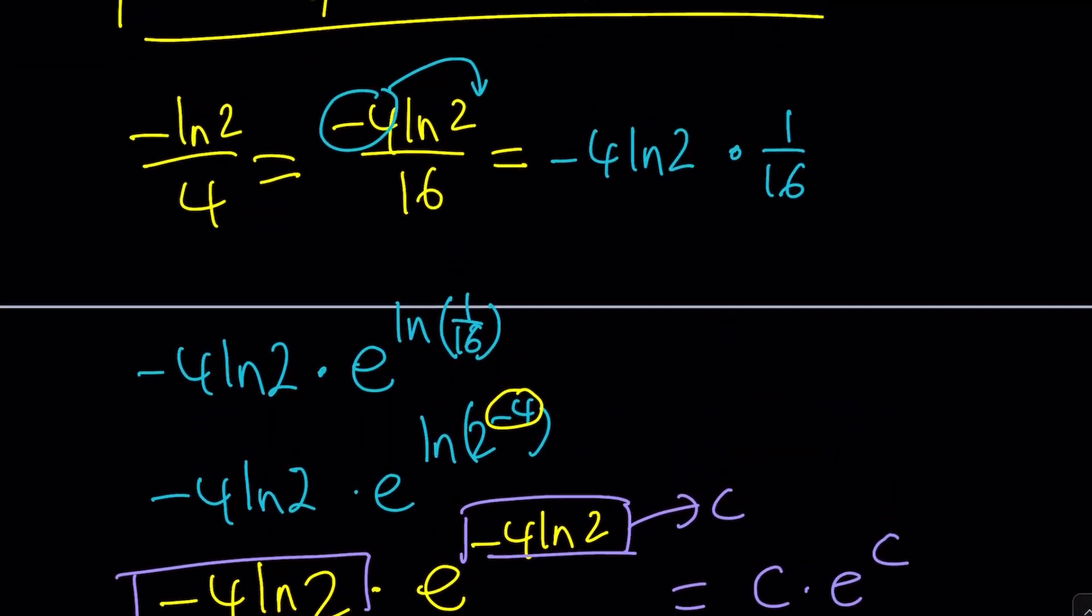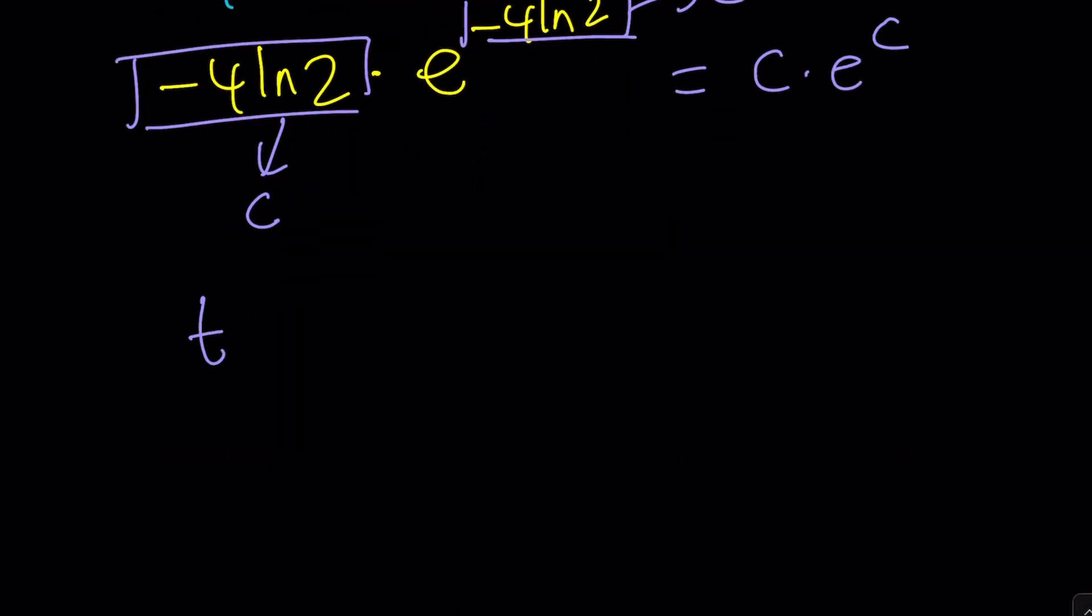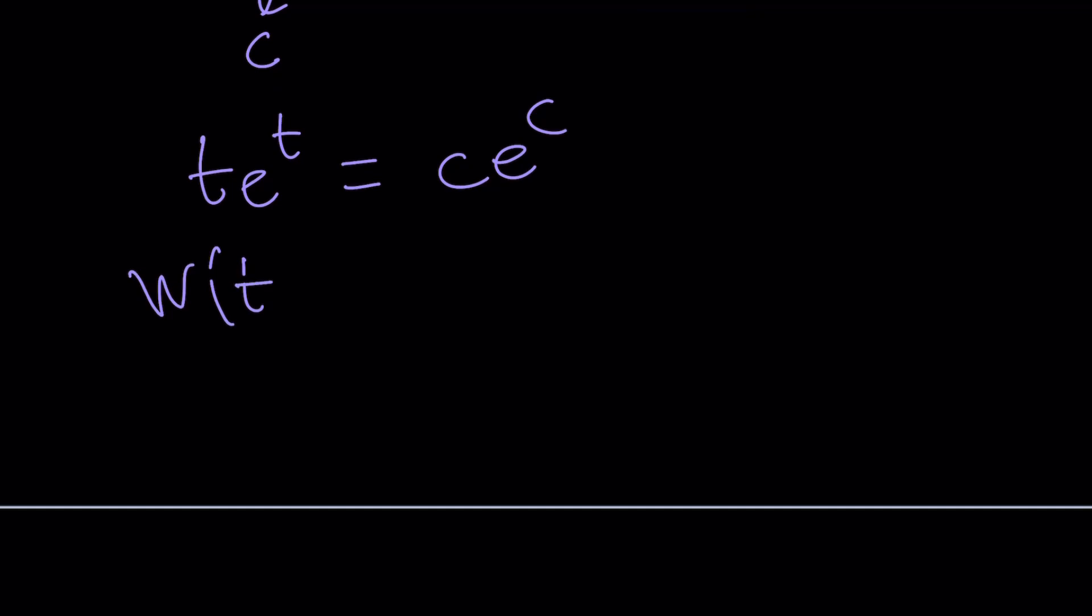Going back to what we had, this became C e to the C. Now I have T e to the T equals C e to the C. You might say okay, then T equals C, but let's just do it the Lambert way. We're going to apply W to both sides, and by applying Lambert's W to this, you're going to get T and you're going to get C from here.